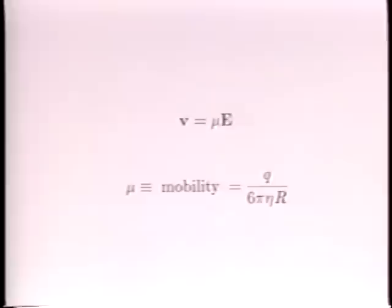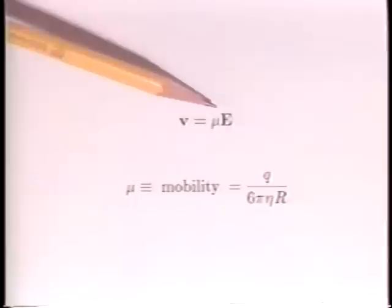The coefficient relating the particle velocity to the electric field intensity, mu, is defined as the mobility. It is generally proportional to the particle charge q.